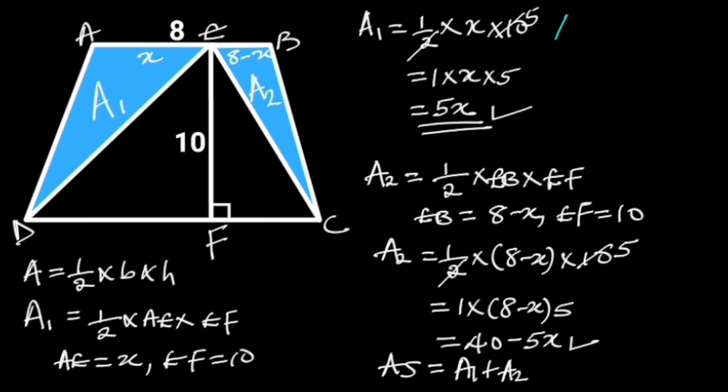the area of the shaded portion is equal to 5X plus 40 minus 5X. 5X minus 5X will cancel out, and we are left with 40. Hence, the area of the shaded portion is 40 square units.